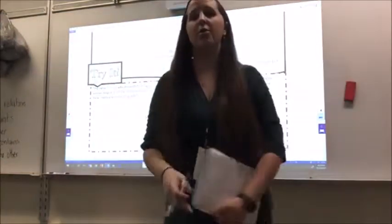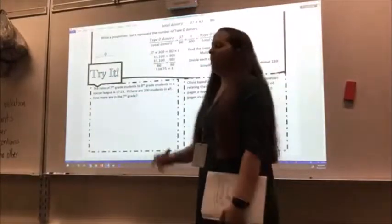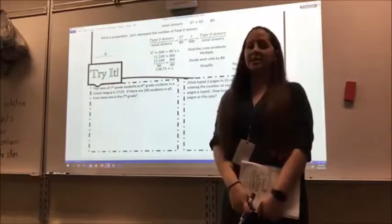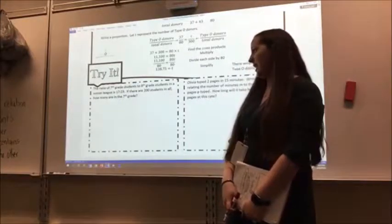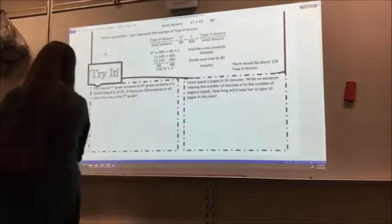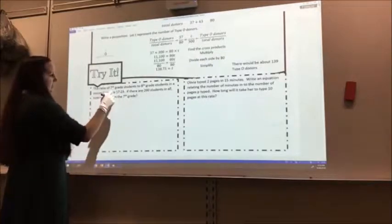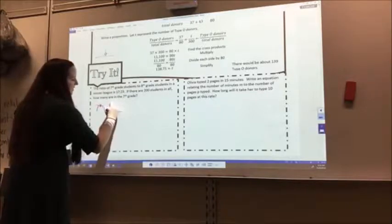So the first one I have is this one right here. The ratio of seventh grade to eighth grade students in a soccer league is 17 to 23. If there are 200 students in all, how many are in the seventh grade? So I want to go ahead and set up my proportion. First thing I want to do is 17 represents the seventh graders, so seventh grade, that's 17.